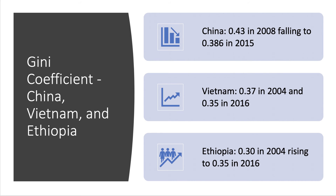One measure we can use is the Gini coefficient. In China, since 2008, the Gini coefficient has come down from 0.43 to under 0.40 in 2015 — though there are doubts about data accuracy. In Vietnam, per capita incomes have risen and the Gini coefficient is marginally lower than in 2004, going from 0.37 to 0.35. However, in Ethiopia it has gone up from 0.30 in 2004 to 0.35 in 2016. So it's not automatic that fast growth leads to worsening inequality — much depends on the individual context of each country.